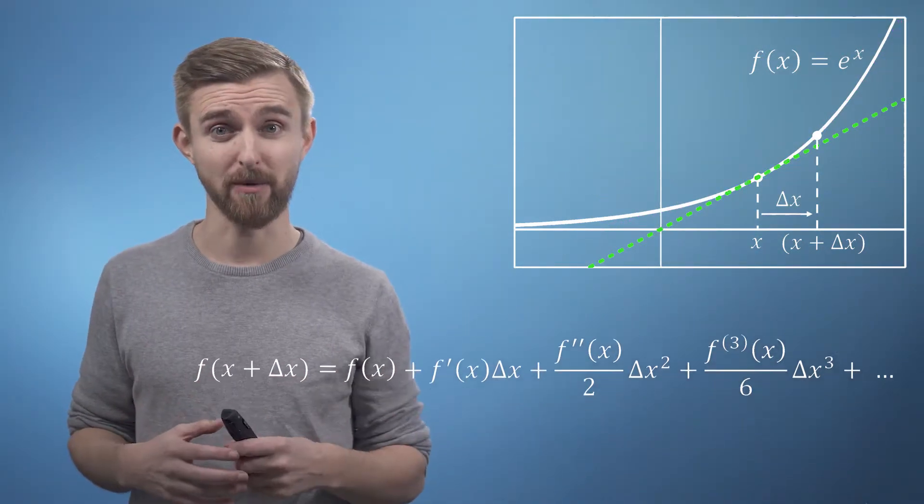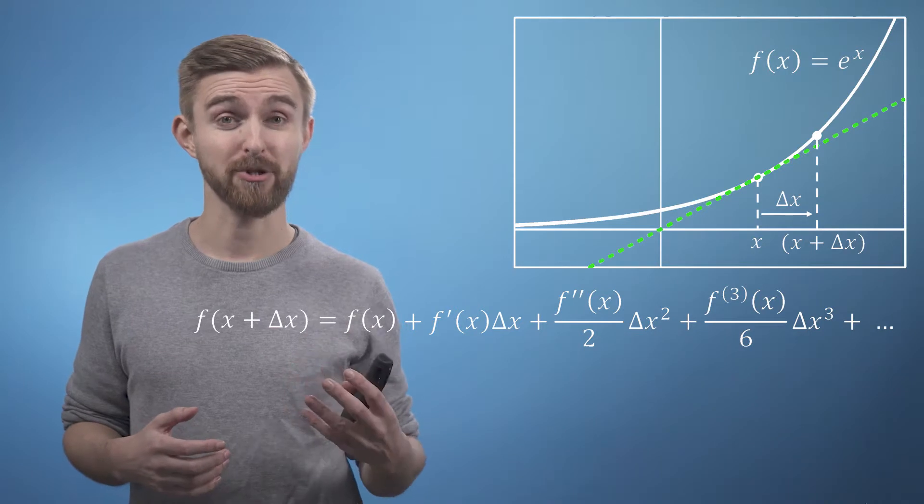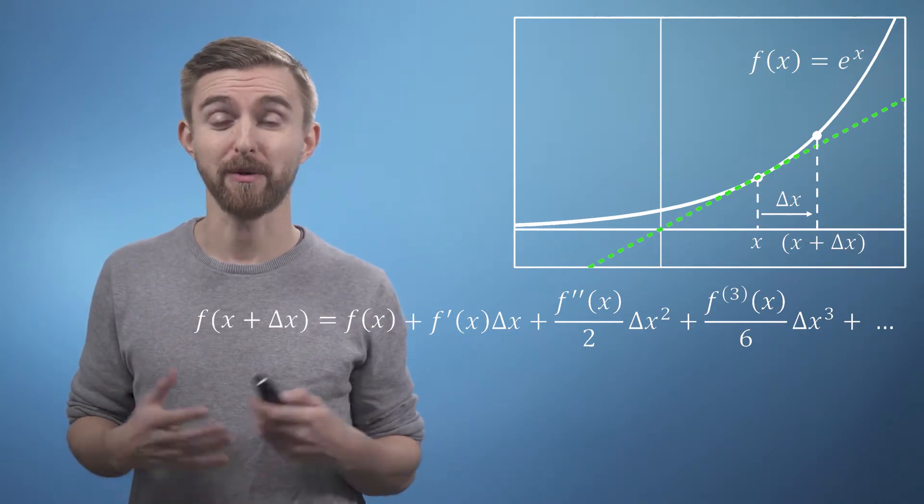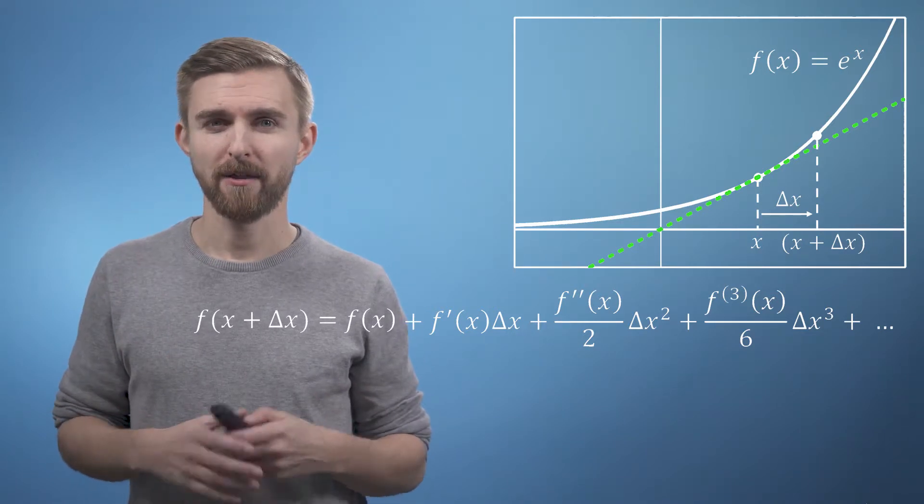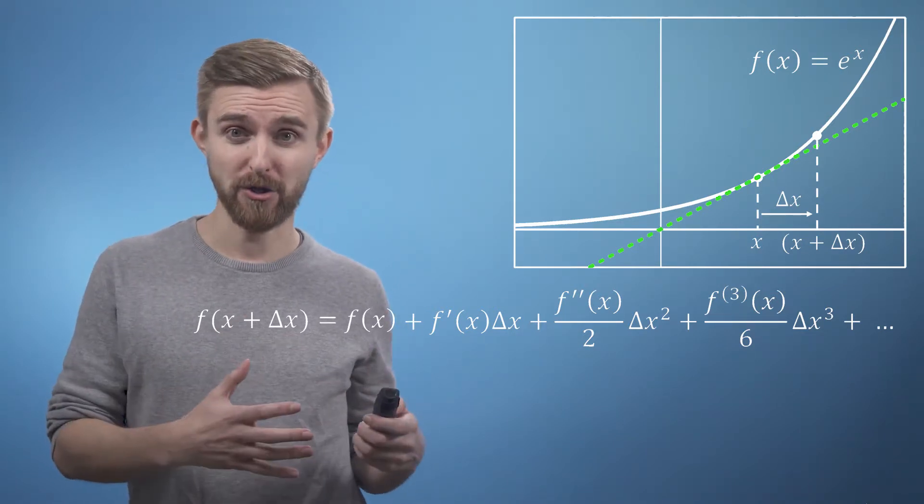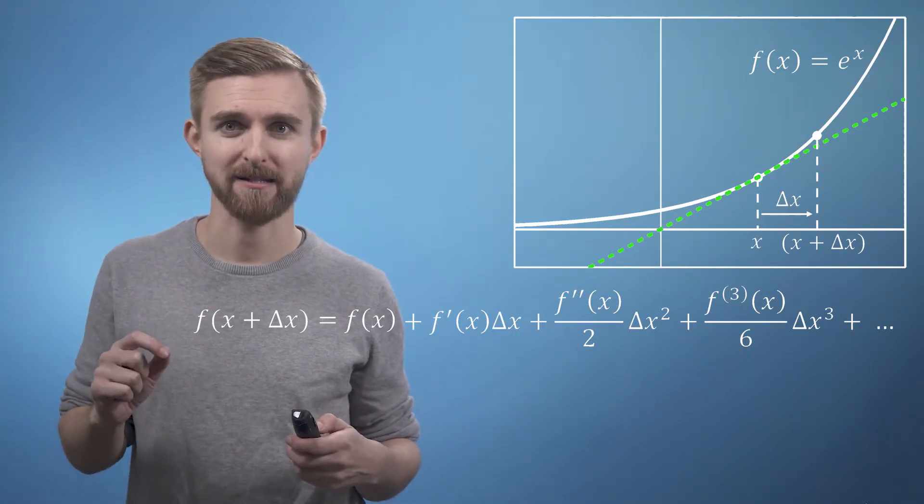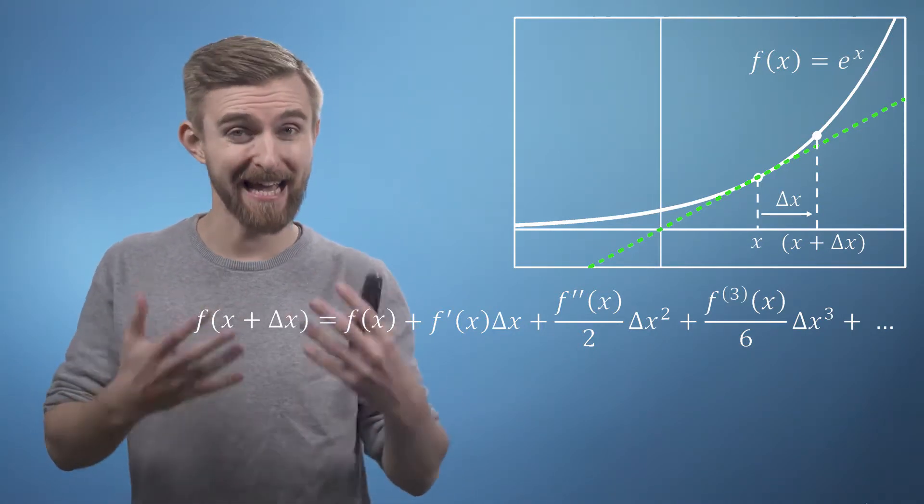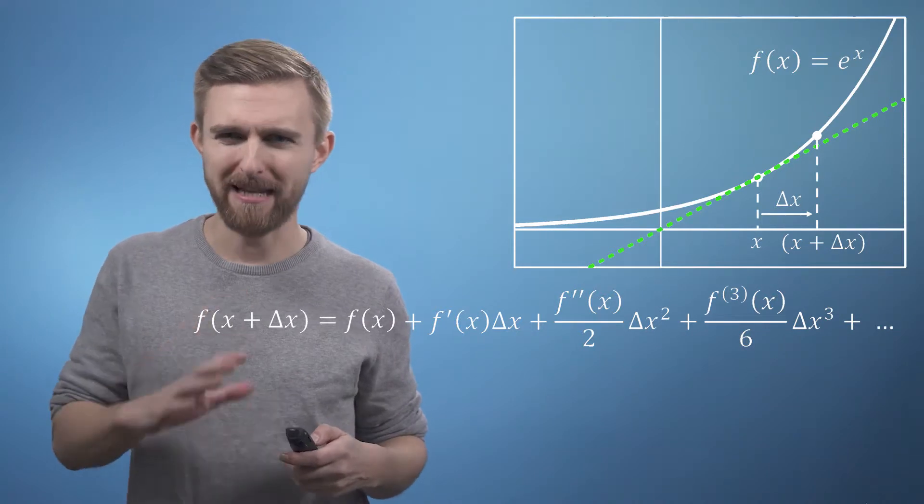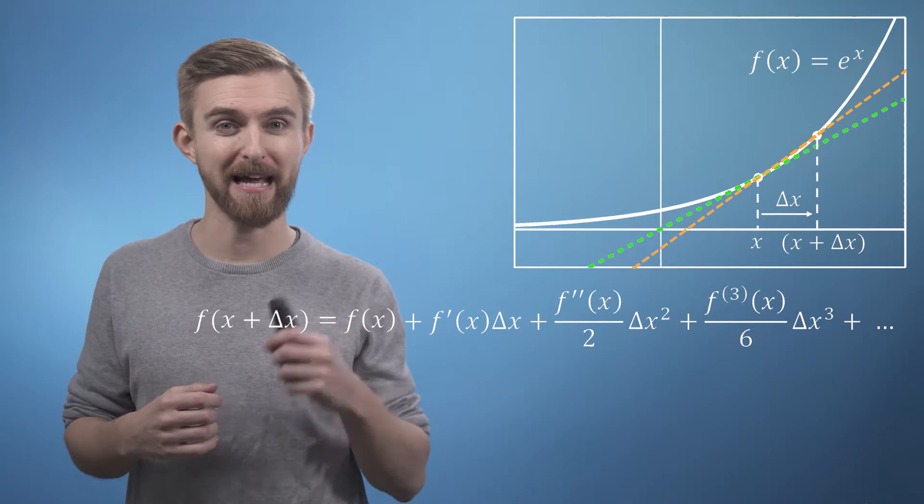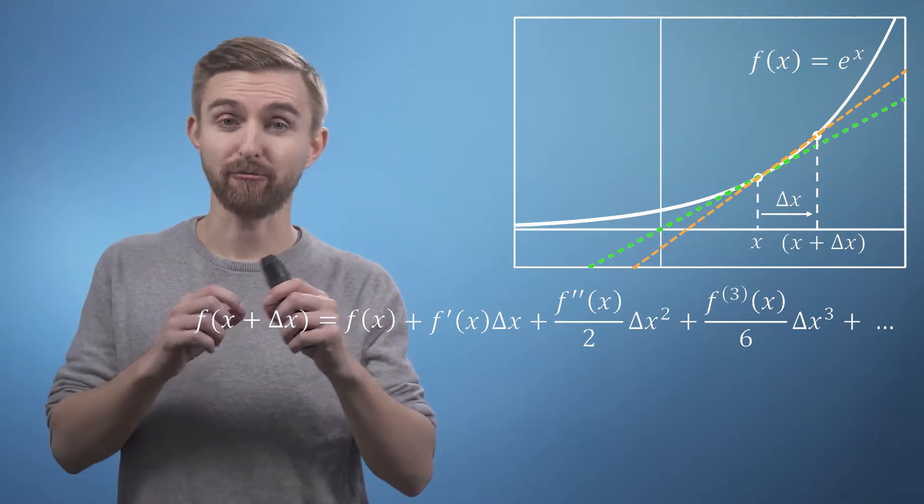The last idea that I'm going to share with you in this video is perhaps the most interesting, as it brings us right back to our rise over run approximation that we met at the beginning of the course. The green line is our first order Taylor series approximation to the function at the point x, which is of course also the tangent to the curve at x.